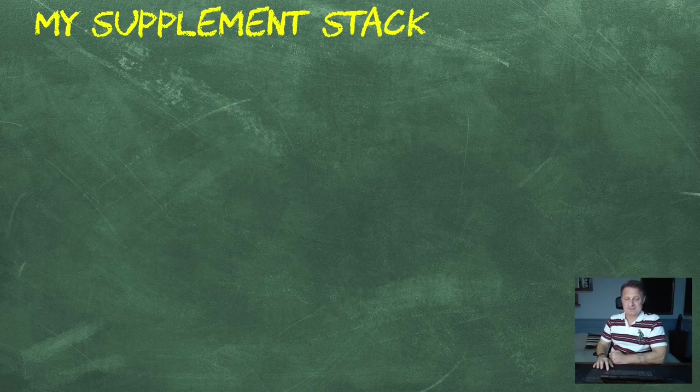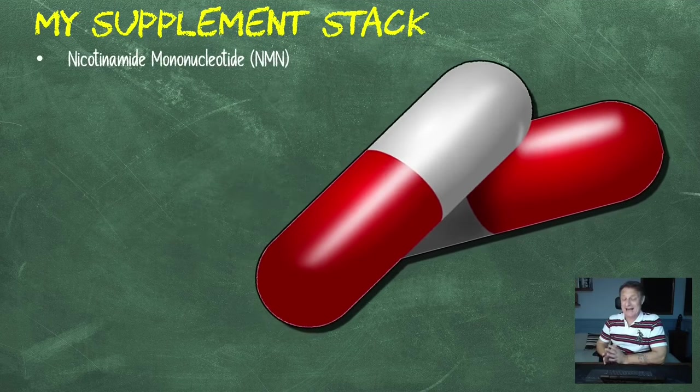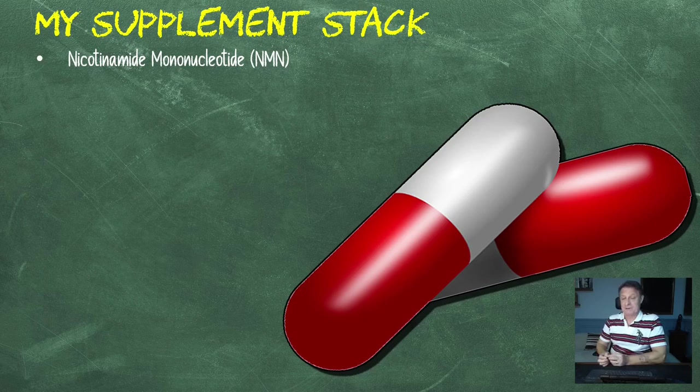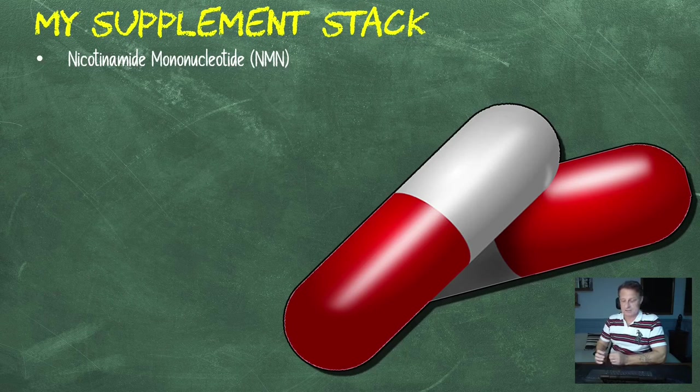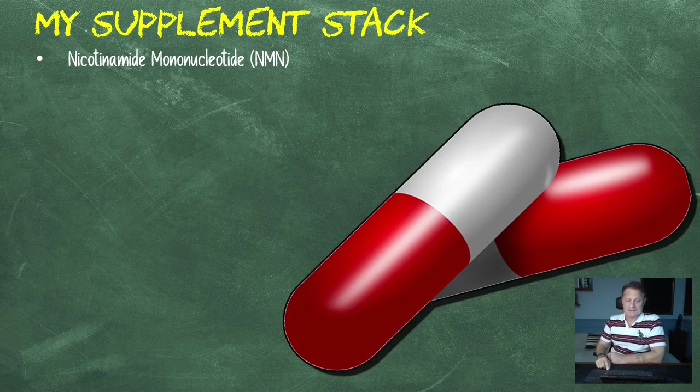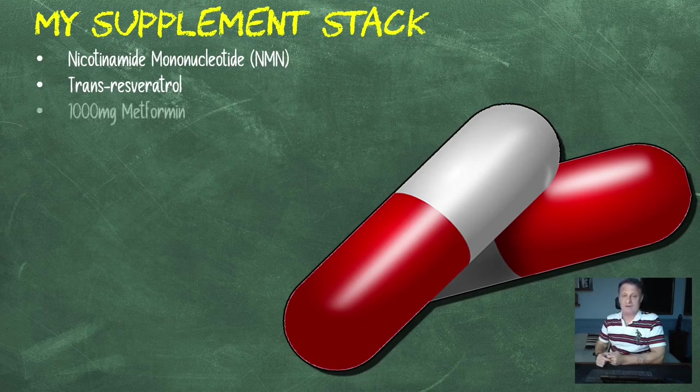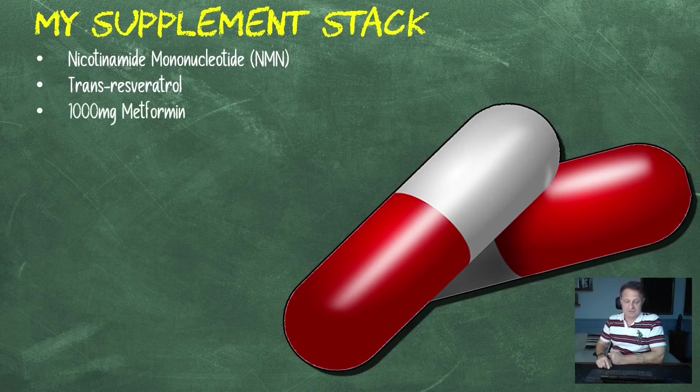Let's quickly go through my supplement stack. 1.5 grams of NMN per day. I've stopped taking the dried parsley. I got given an NAD test by Do Not Age and I'm going to take that very soon. Dried parsley is high in apigenin, which inhibits CD38, allowing your NAD levels to raise even more. So I'm just going to get my NAD levels tested on 1.5 grams of NMN a day. 1.5 grams of trans-resveratrol, and I only take that on days I don't weight train - Tuesday, Thursday, and Saturday. 1,000 milligrams of metformin, 500 in the morning and 500 just before night.